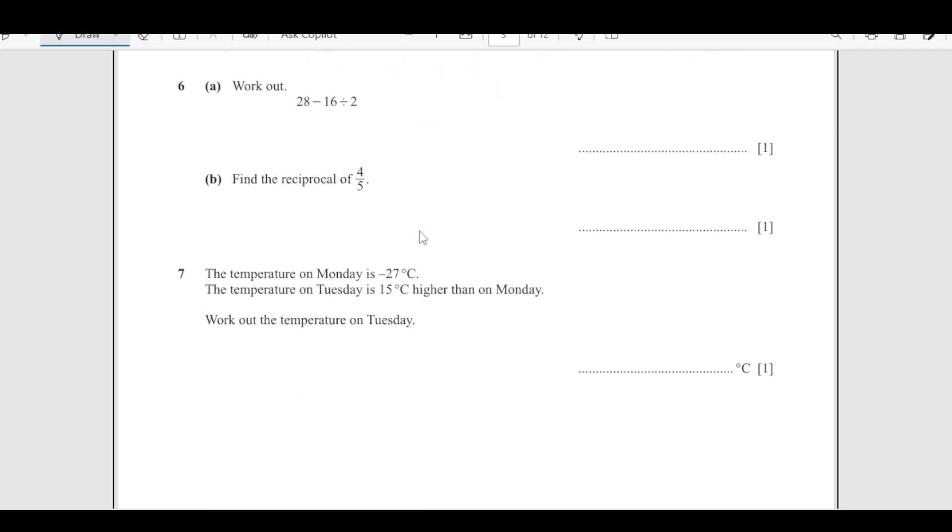Number 6: work out 28 minus 16 divided by 2. We are going to use BODMAS here. There is no bracket. We are going to do division first. Division is here. So 28 minus this is 8. Answer is 20.